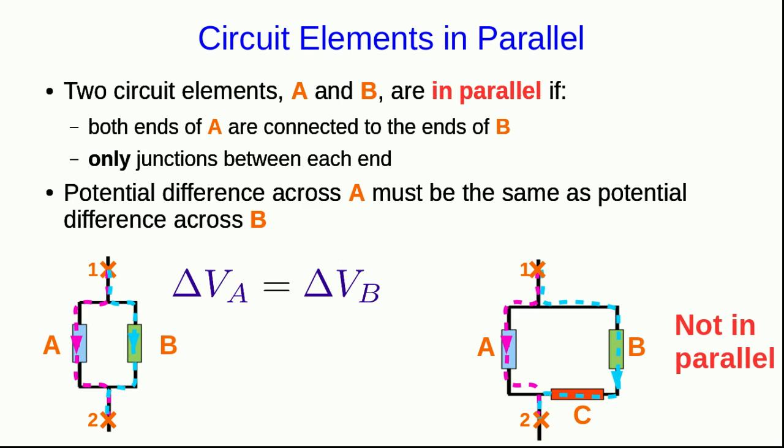By the way, it's quite possible for circuit elements to be neither in series nor in parallel. In fact, that's probably the most common situation. A, over in this case with A, B, and C, is certainly not in parallel with either B or C.